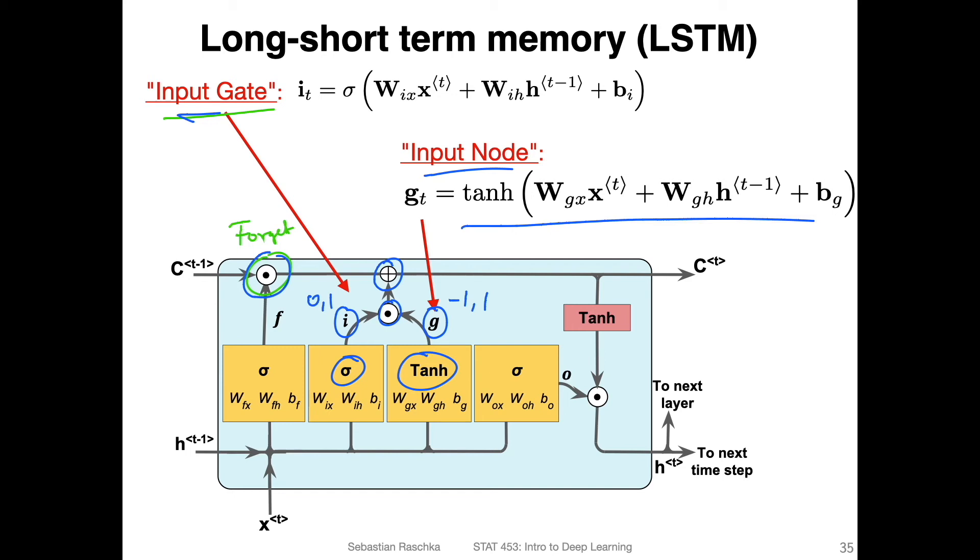This gets added to the previous cell state, which might be erased through the forget gate or kept. Each of those are really just computed like in a regular neural network where we have W times x. Here we have a plus. That's how we compute this. And then the same thing for the input gate, we have logistic sigmoid instead of a tanh now.